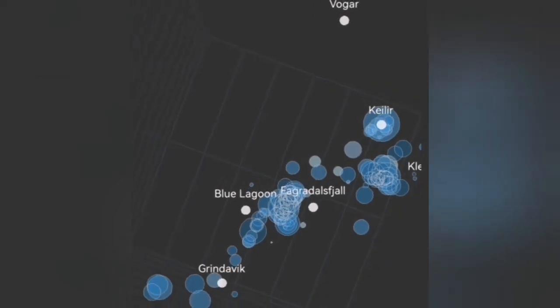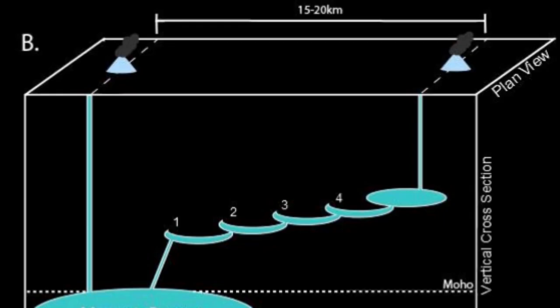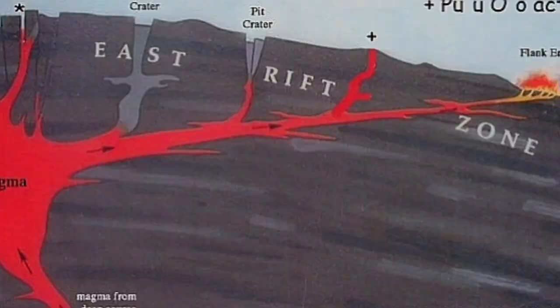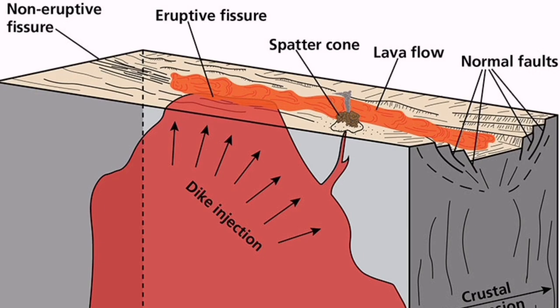This diagram or cartoon shows what I mean by this transgressive sill moving from what is Svartsengi at an angle toward the town of Grindavik, the vicinity, north part of it.